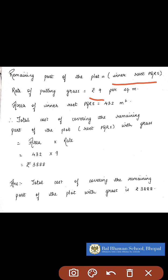And we have already found out that the area of the inner rectangle is 432 meter square. Hence, we can find out the total cost of covering that part of the plot with grass will be area into the rate. That is 432 into 9, which will give you Rs. 3888. Therefore, the total cost of covering the remaining part of the plot with grass is Rs. 3888.